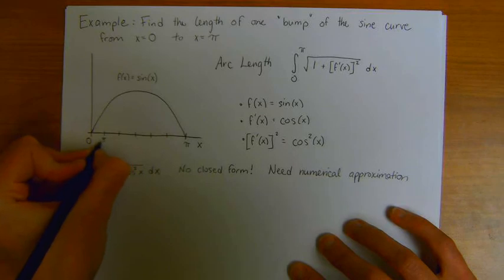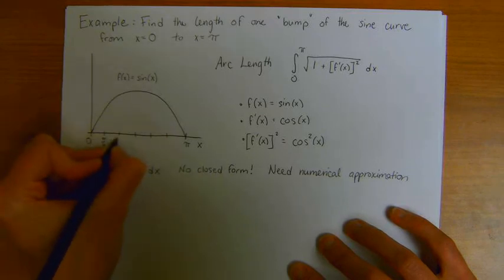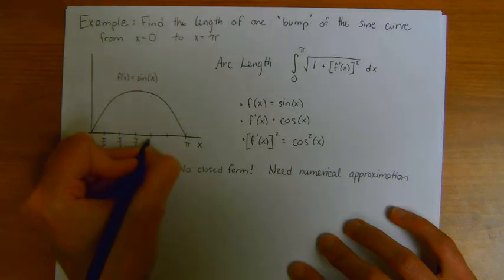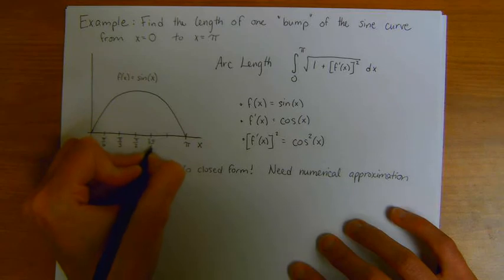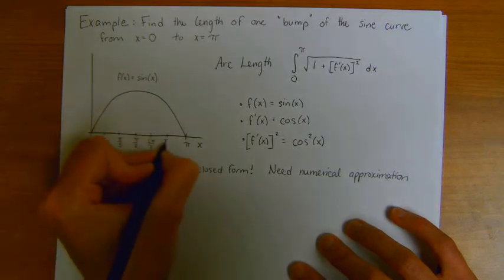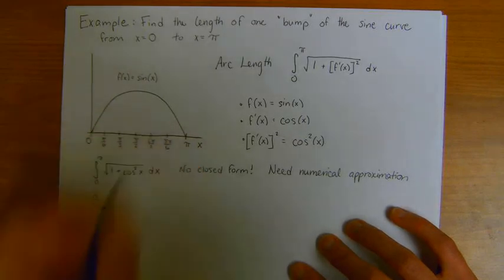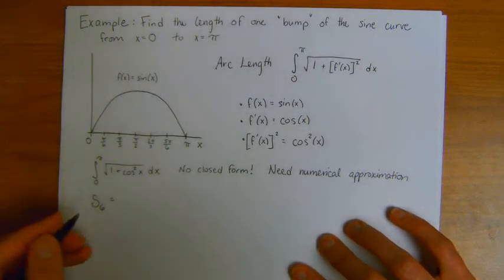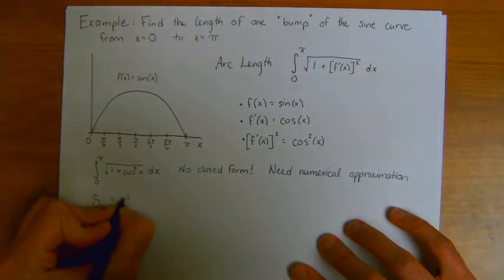And then 2 pi over 6 is pi over 3, 3 pi over 6 is pi over 2, 4 pi over 6 is 2 pi over 3, and then 5 pi over 6 before we get to pi.